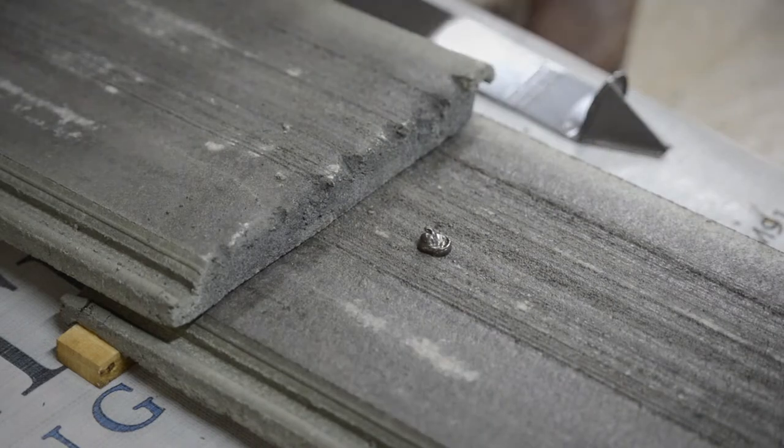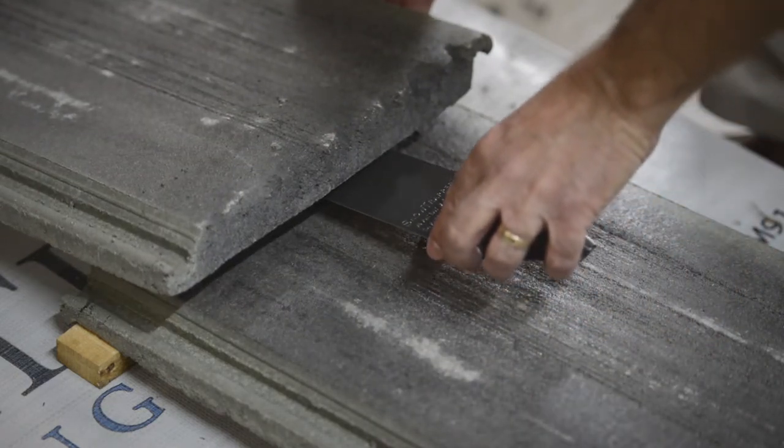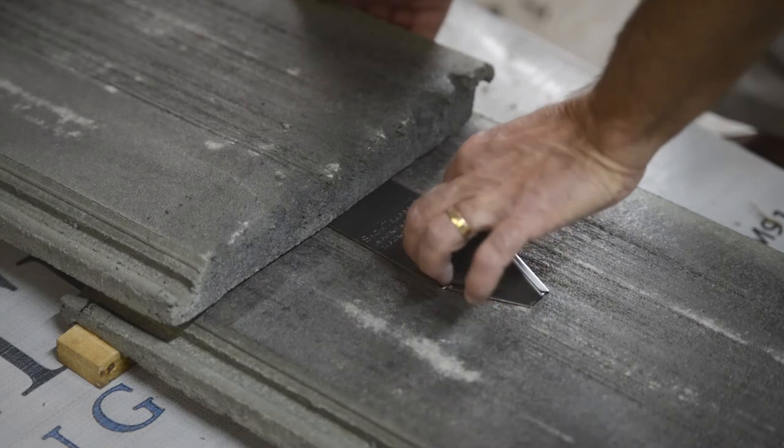Apply a small amount of sealant adhesive on the tile at the snow guard location. Then slide the snow guard under the course above and pull down to engage the barb on the top of the tile.